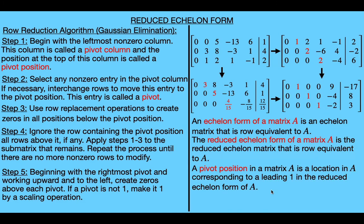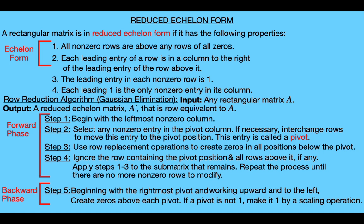I recommend going through this algorithm choosing different pivots and verifying that no matter which pivots you choose, you get the same reduced echelon form — that will give you good practice. Here is a summary of everything we covered: the definitions for echelon and reduced echelon form and all five steps of the algorithm. The first four steps are called the forward phase of the algorithm, and the last step is called the backward phase. Thanks for watching, and I'll see you next time.